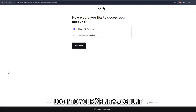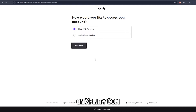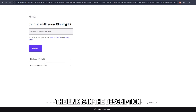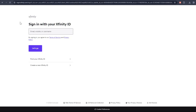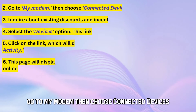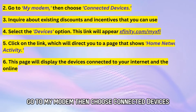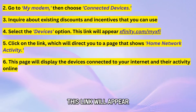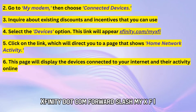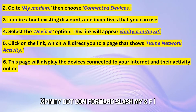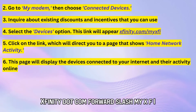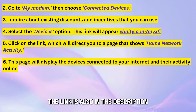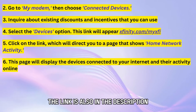Log in to your Xfinity account from their official website at Xfinity.com — the link is in the description. Go to My Modem, then choose Connected Devices, and select the Devices option. This will bring up the link xfinity.com/myxfi, also provided in the description.